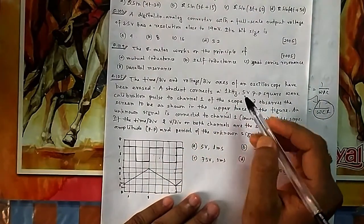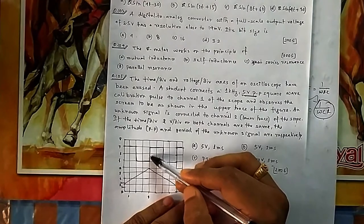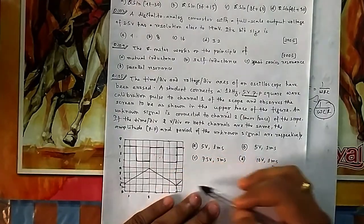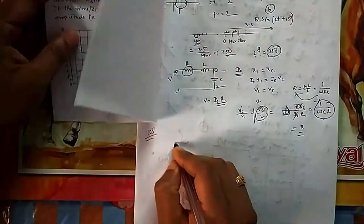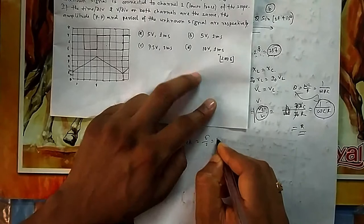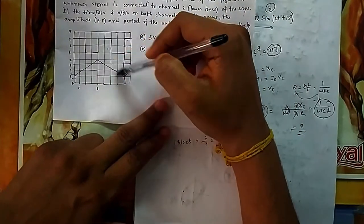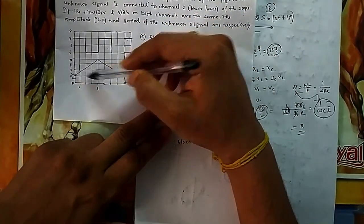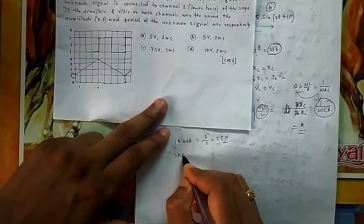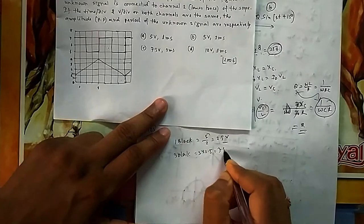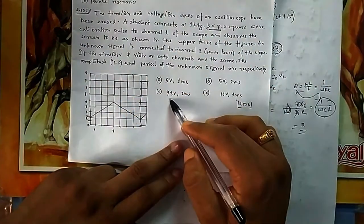For the calibration square wave: peak-to-peak is 5 V and it occupies 2 vertical blocks, so each block = 5/2 = 2.5 V/div. For the unknown signal (triangular wave), the peak-to-peak spans 3 vertical blocks, giving peak-to-peak voltage = 3 × 2.5 = 7.5 V.